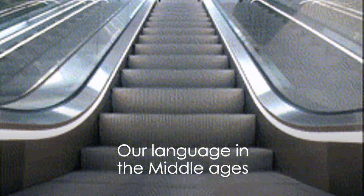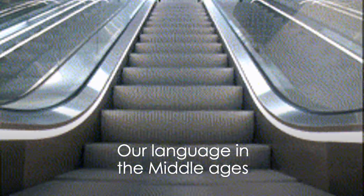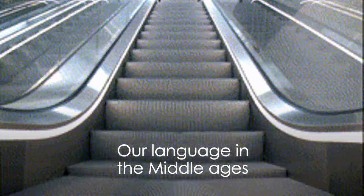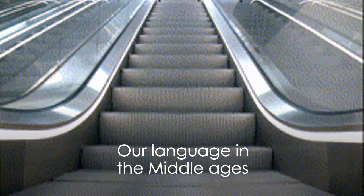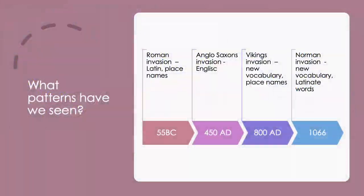In this lesson we're going to look at how language changed in England in the Middle Ages. Let's have a look at what we've learnt so far. There were definite patterns to the development of language in England across the ages and most of these patterns were linked into invasions by different groups of people.